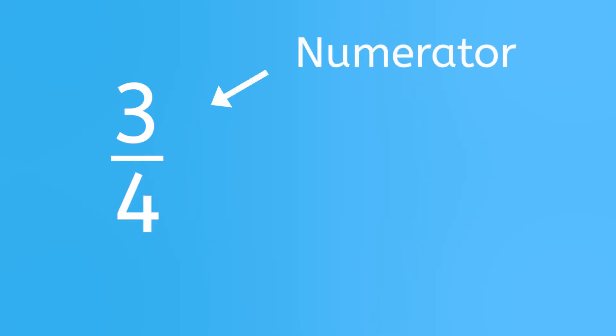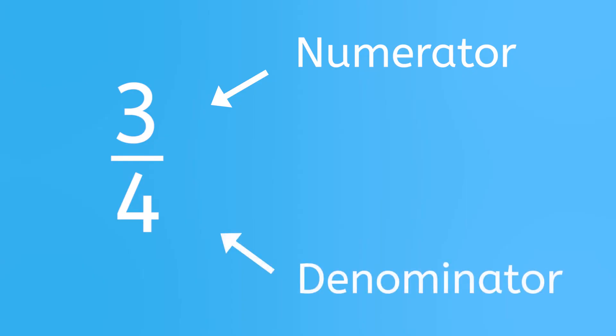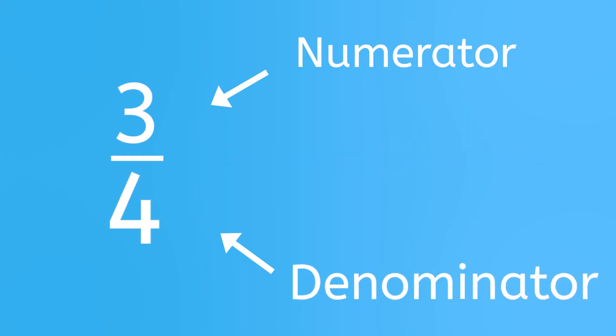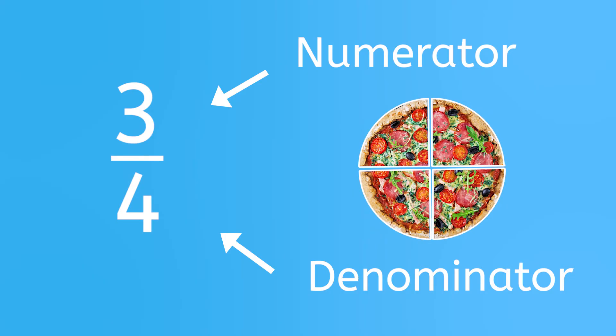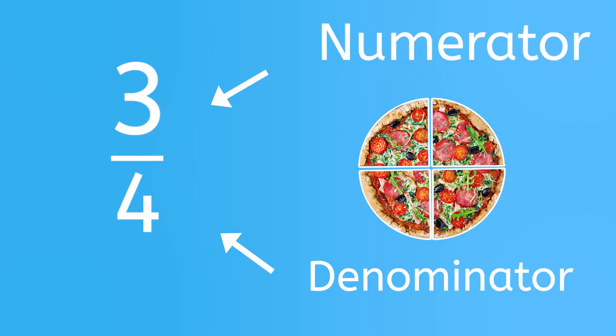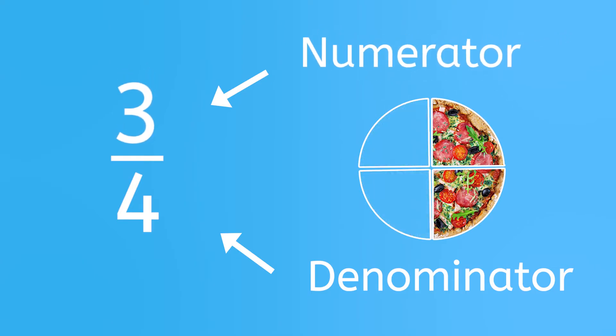Let's look at how to read and write fractions more closely. Fractions are written in a special way. You may have noticed that the three is written at the top, the four at the bottom, and a small line separates the two. Numbers written in this way represent or show a fraction. The number in the top position has a special name — it's called the numerator. The number in the bottom position also has a special name — it's called the denominator, and the line going across is a fraction bar. The bottom number, or the denominator, tells how many parts the whole is divided or cut into.